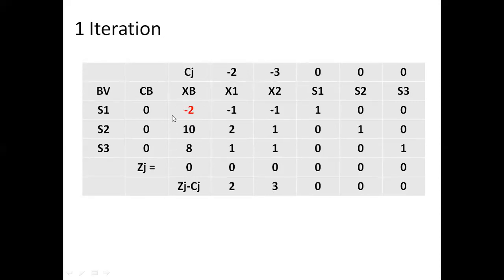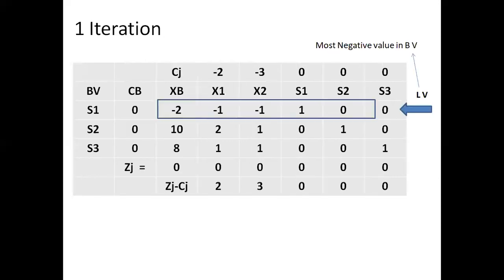To proceed, we need to identify the leaving variable and the entering variable. The leaving variable is the basic variable with the most negative value in the basic variable column, which is minus 2, corresponding to S1. So S1 is the leaving variable. The entering variable is found by dividing all ZJ minus CJ values by the corresponding pivot row elements.